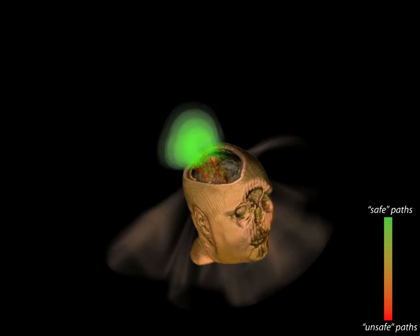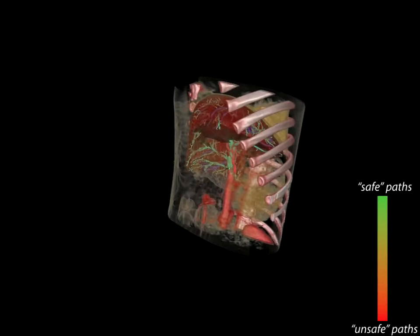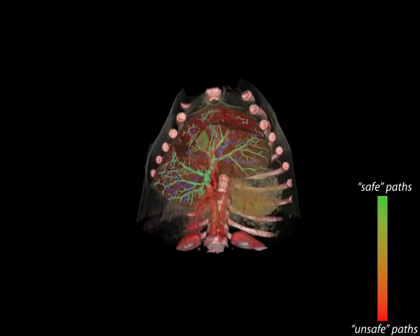Another abdominal example shows our method incorporating newest vessel segmentation algorithms for liver tumor ablation planning. Now, we add safe long and short paths to the visualization in green.